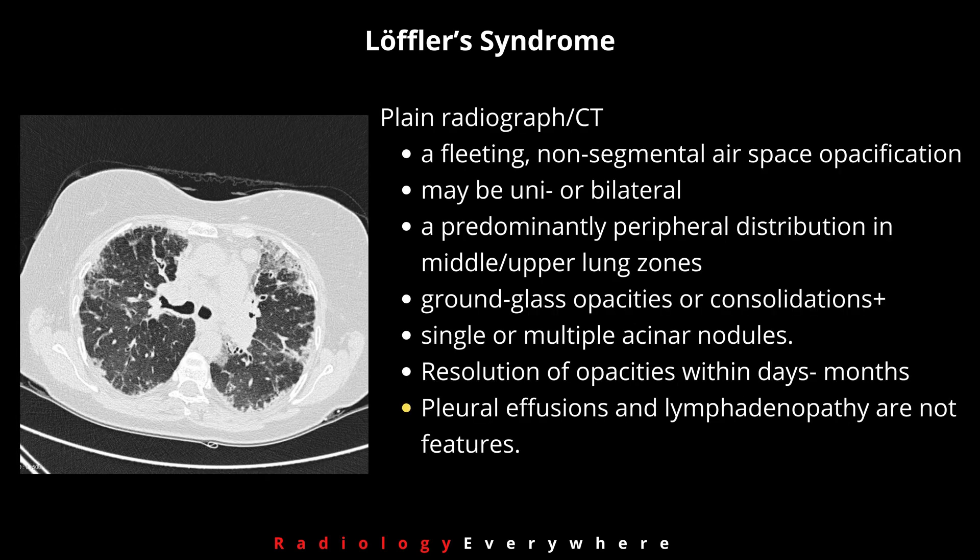When considered on plain X-ray or CT, the changes are fleeting non-segmental airspace opacification. This airspace opacification can be unilateral or bilateral and predominantly peripheral in distribution, especially in the upper and middle lung zones.